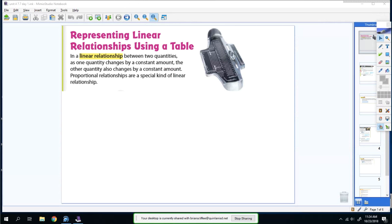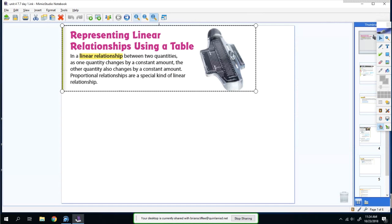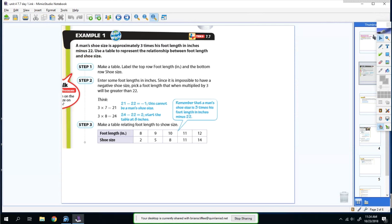Proportional relationships are a special kind of linear relationship, and that's what we're going to show you. Example 1: A man's shoe size is approximately three times his foot length in inches minus 22.